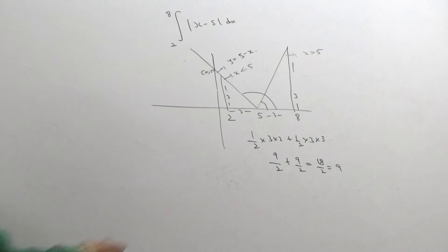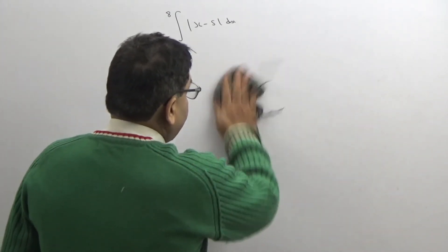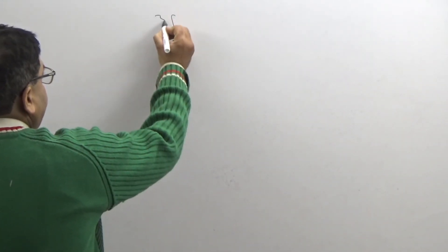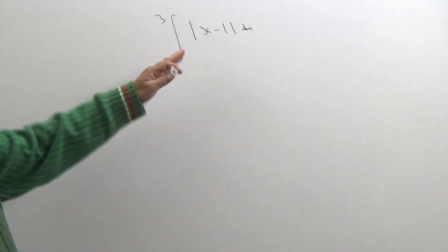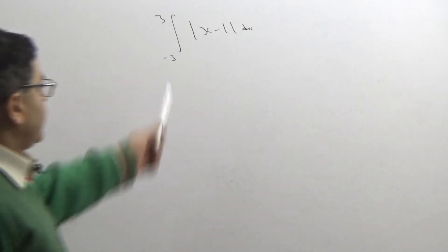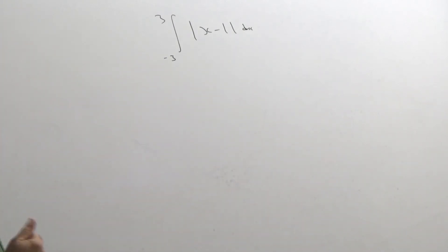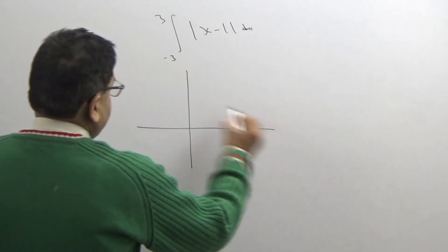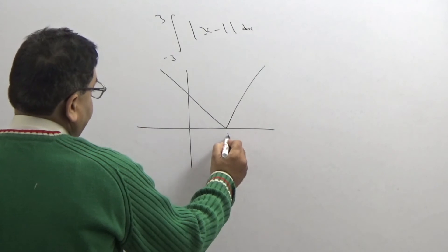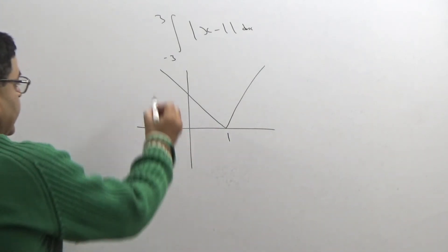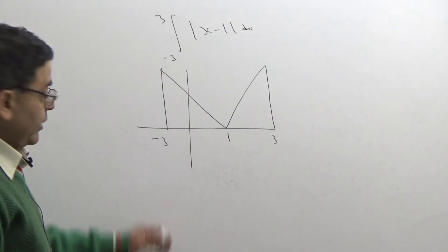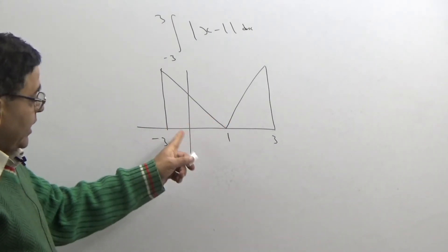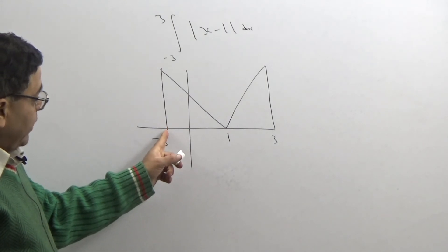Now I am taking another problem in which students make so many mistakes, but by this method we will be able to solve it very easily. Suppose we have ∫₋₃³ |x−1| dx. When students adopt the traditional method to solve it, they make so many mistakes. So first you draw the graph of |x−1| with critical point at 1. The limits given are −3 and 3. Taking the left side: −3 to 1 gives a base of 4 units (physically 3+1=4), and mathematically −3+1 = −2.